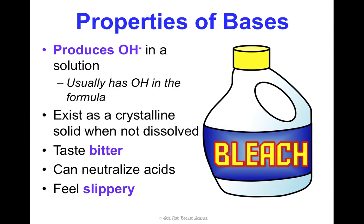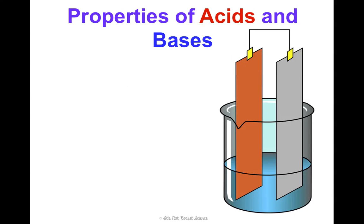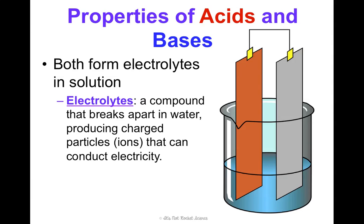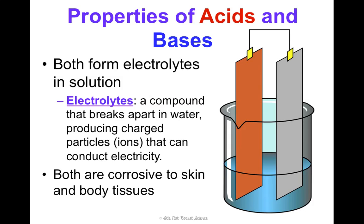Two things that both acids and bases share in common: they both form electrolytes in solution. Electrolytes — you may have heard that word with Gatorade. It's a compound that breaks apart in water and it produces charged particles, which are ions, that can actually conduct electricity. Another thing is that they're both corrosive to skin and body tissues if they're really acidic or really basic.